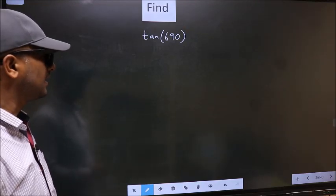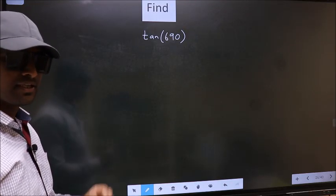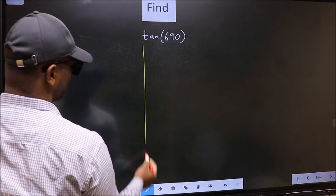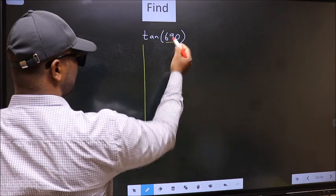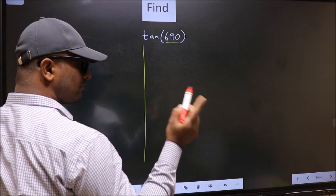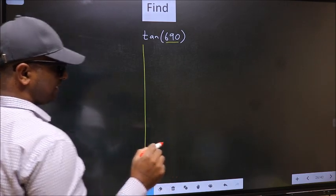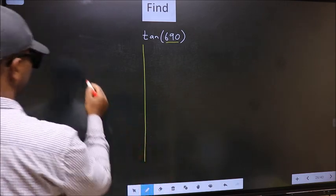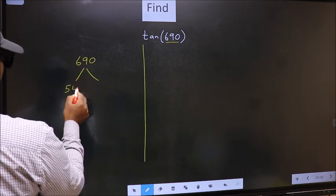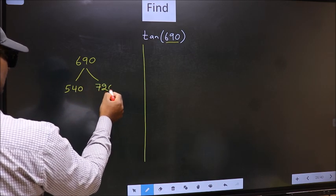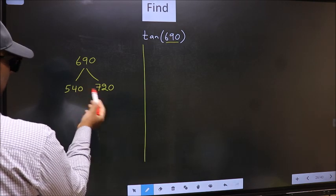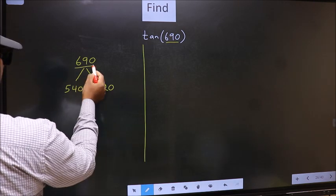Find tan 690. To find this, we should follow this method. Here we have 690. Now you should check: 690 lies between which two multiples of 180. 690 lies between 540 and 720. This is 180 into 3, and this is 180 into 4. Between these two numbers, 690 lies.